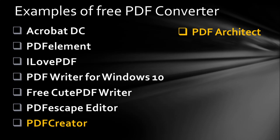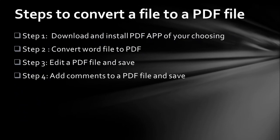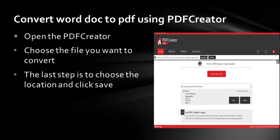What I can recommend is PDF Creator — I use it and this is what we are going to be installing. We also have PDF Architect, but that is a paid version. The steps to convert a file to PDF are: first, download and install the PDF app on your computer; second, convert the file to PDF; and you can also edit the file, add comments, and save.